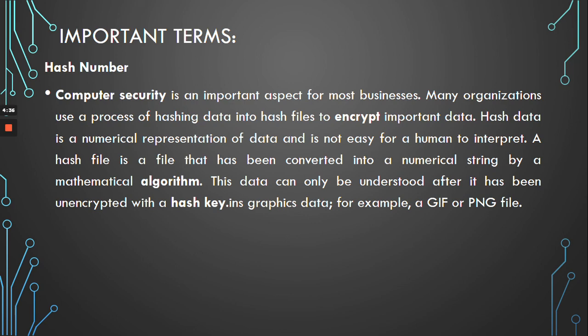So when a regular person sees hash data, they cannot decode or immediately make sense of the information because it is just represented in numbers. Different types of data have different hash data — for example, graphics data has its own different hash number. A hash number is generally used by security professionals. With that, I'm sure we can go on.